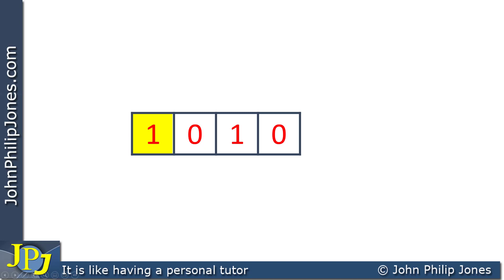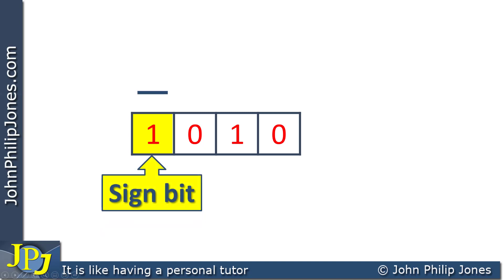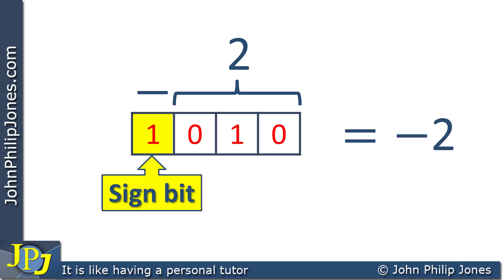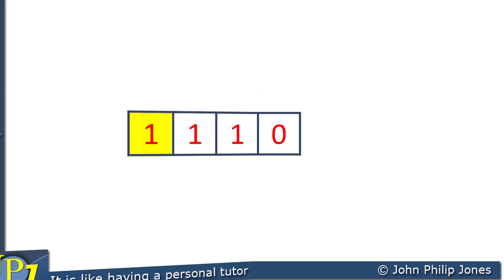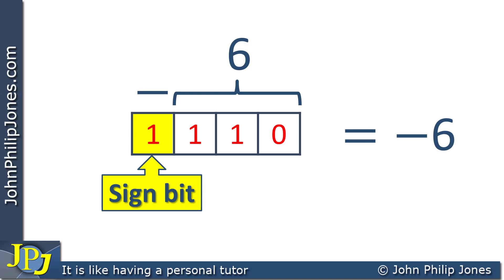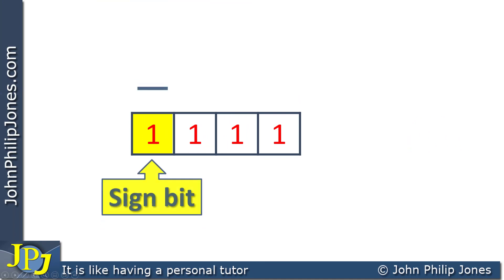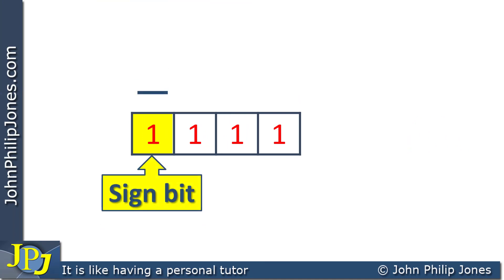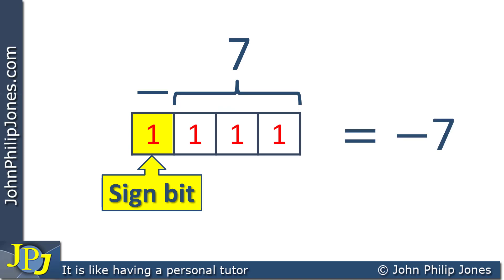Consider this example: the sign bit is a 1, which represents negative. The other three bits are the magnitude, which is 2, so the nibble represents minus 2. Consider this next example: the sign bit is 1, therefore negative. The sign bit represents negative and the remaining three bits are the magnitude, which is 7, so the nibble represents negative 7.